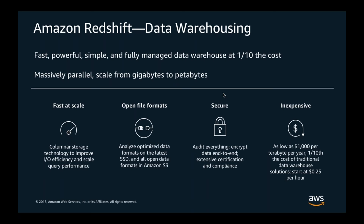You can also store data in open formats in S3 and use Redshift Spectrum to analyze it. The service can be deployed within your VPC, with encryption in transit and at rest, and is compliant with popular standards like PCI DSS, HIPAA, and FedRAMP. You can start as low as $1,000 per terabyte per year — typically one-tenth of traditional data warehouses.